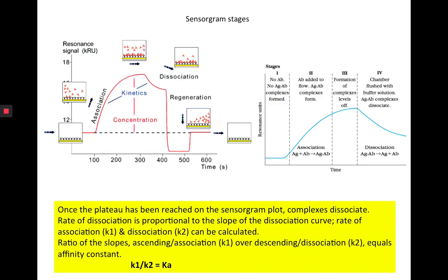A plot of the resonant signal versus time shows the antibodies already immobilized, then the targets binding — that's the association curve — then the signal dissociating, then regeneration where all the targets that have bound are removed, leaving the chip free of targets. This entire loop gives you an idea of the rate of association and dissociation, which gives you the affinity value for the antigen-antibody pair.